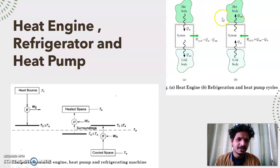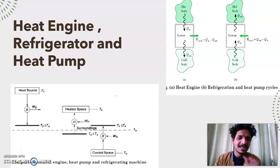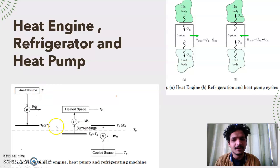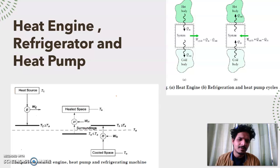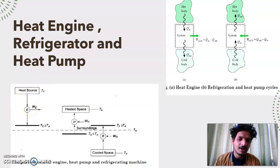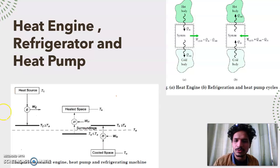So what is a refrigerator? A refrigerator is a reversed heat engine. If you draw a block diagram of a heat engine, it is working between two temperatures T1 and T2. In a heat engine, you take heat from a higher temperature source and get a work output while you reject some amount of heat to the lower temperature.